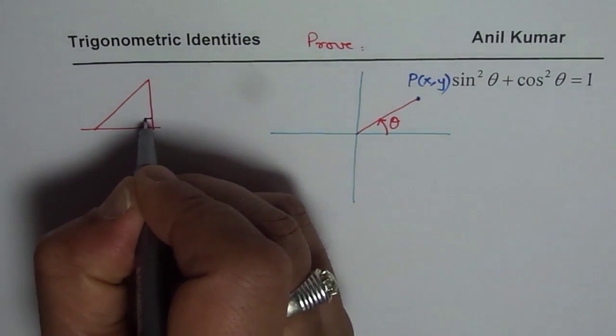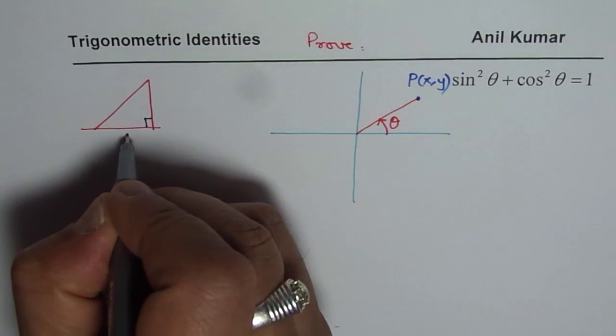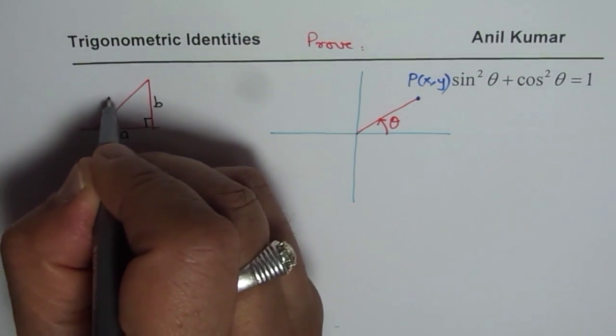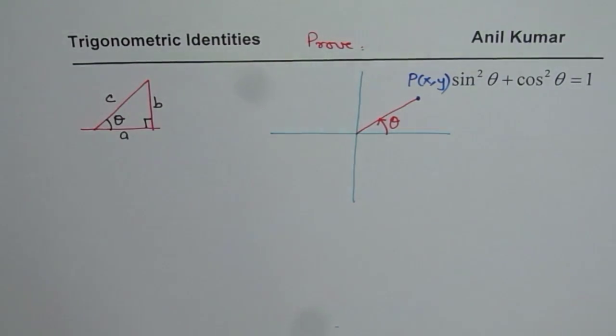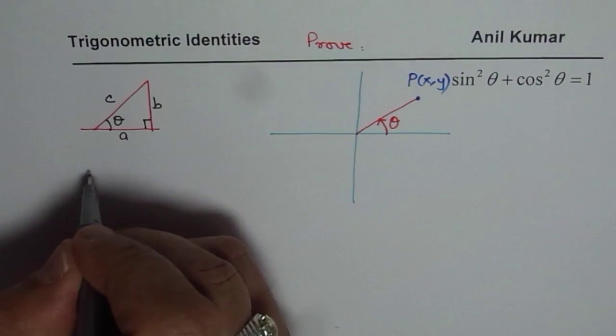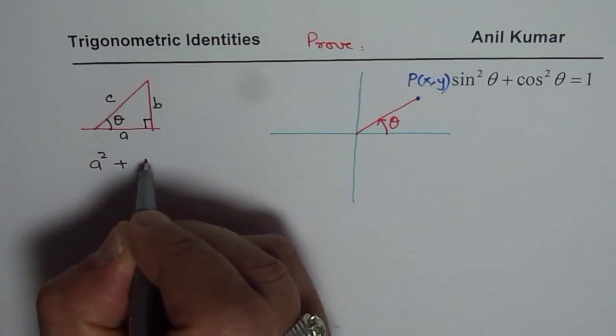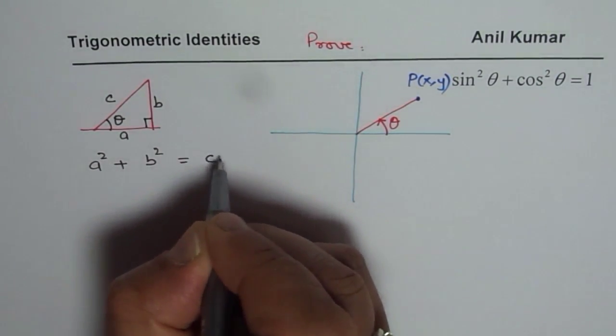We have taken up a right triangle here. Let us say the sides are a, b and c. So this is the right triangle and the angle here let it be theta. So in that case from Pythagorean theorem we know that a square plus b square is equal to c square.